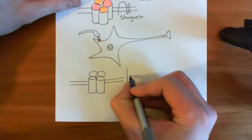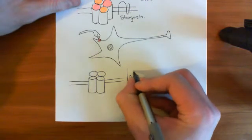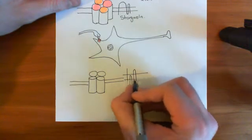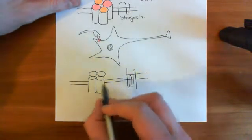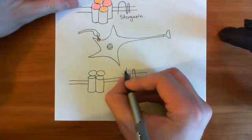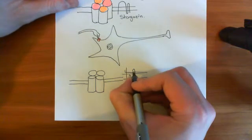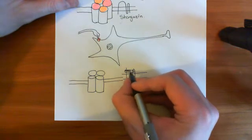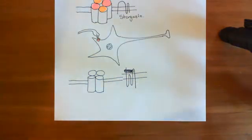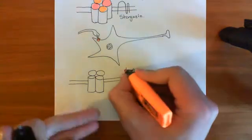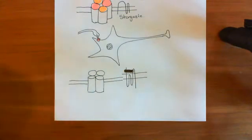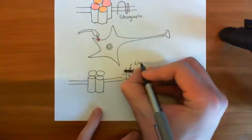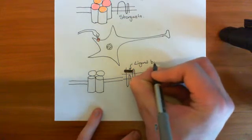The N-terminus portion and the initial portion of the M3-M4 loop come together to form what's known as the ligand binding domain. Those two portions of the polypeptide bind together to form this really important structure. Each one of the four subunits has one of these ligand binding domains.